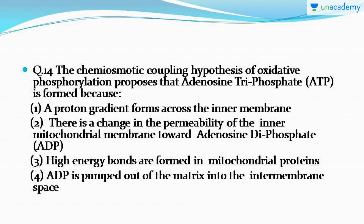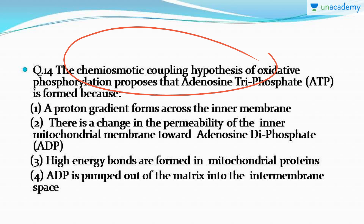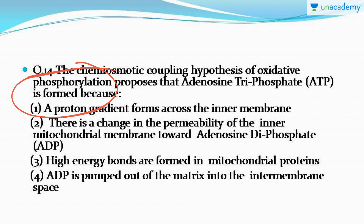Moving forward to the next question: the chemiosmotic coupling hypothesis of oxidative phosphorylation proposes that ATP is formed because — what has been asked is, according to the chemiosmotic coupling hypothesis, how is ATP formed? I hope you do it well, just try it.